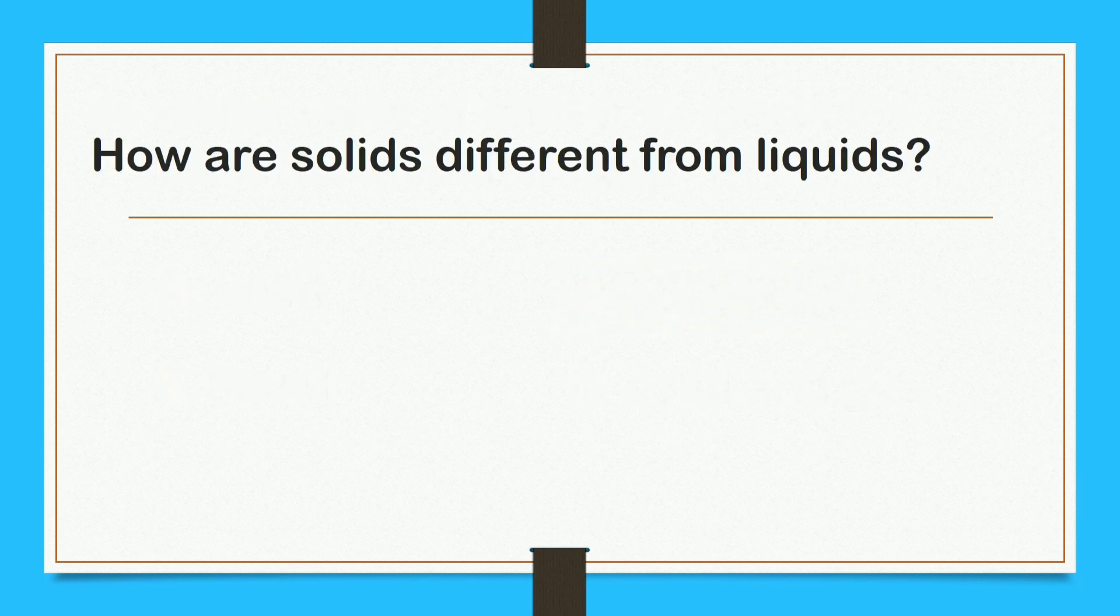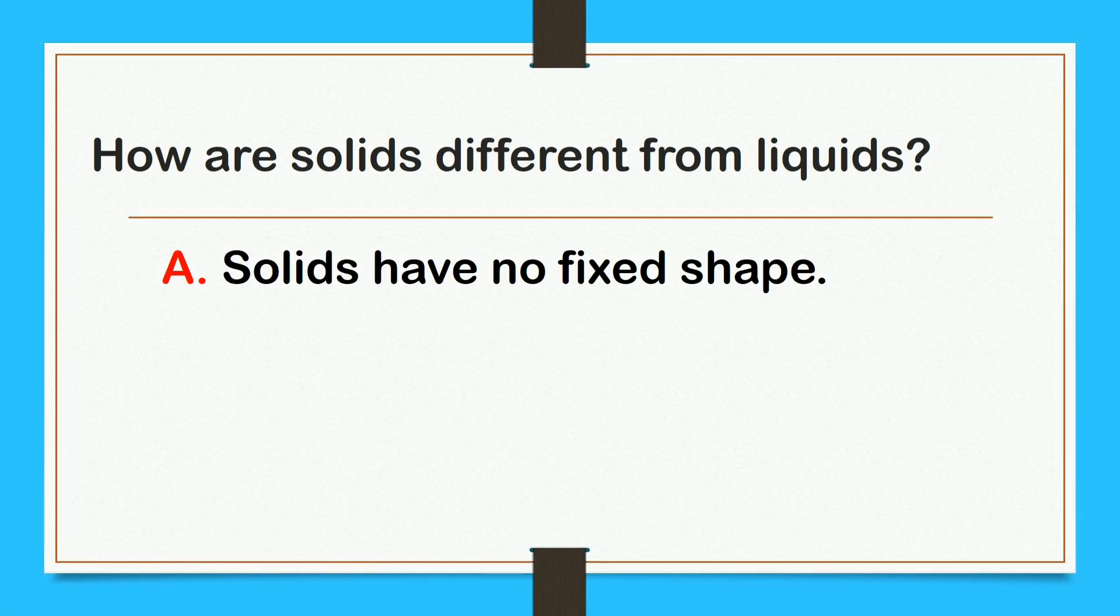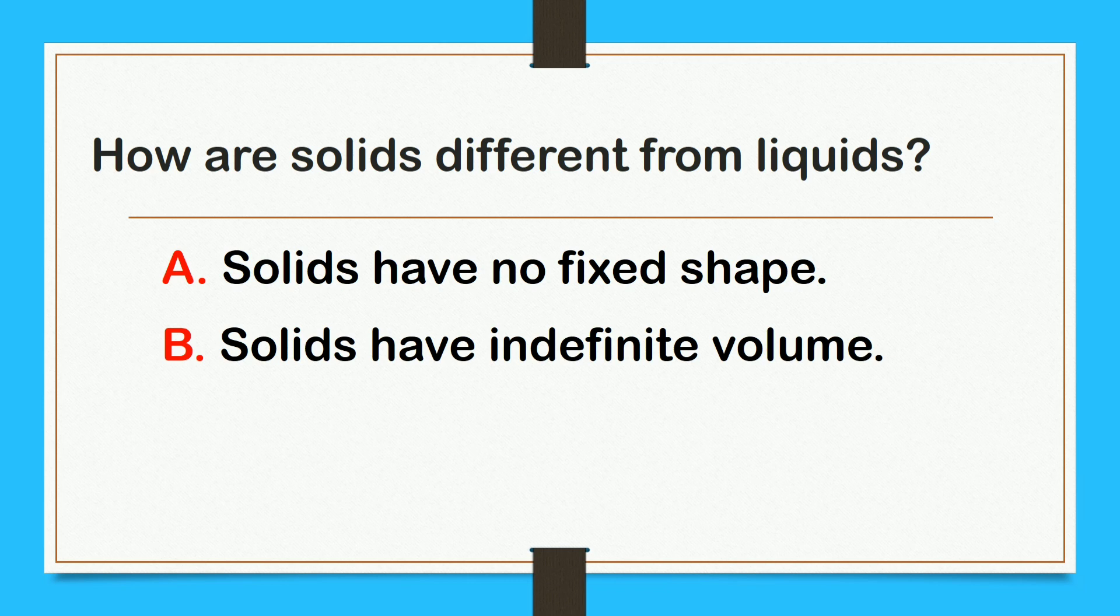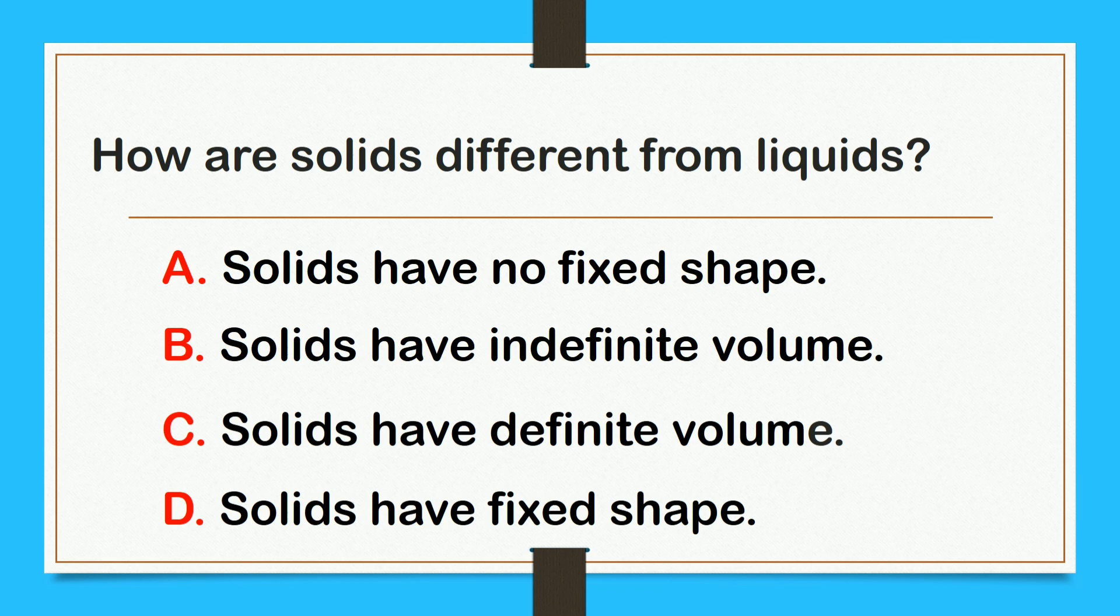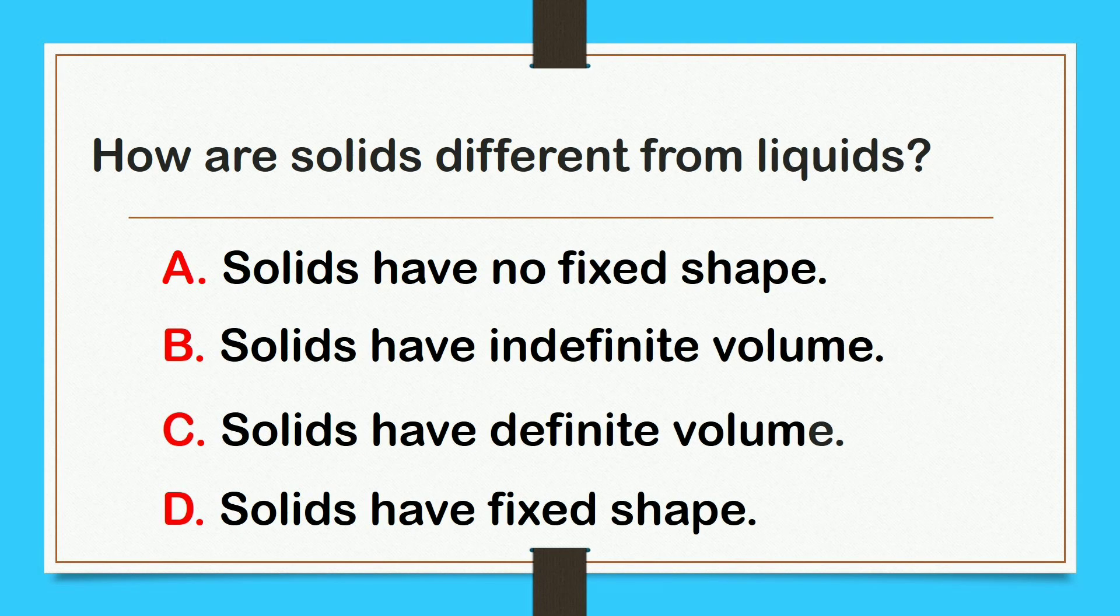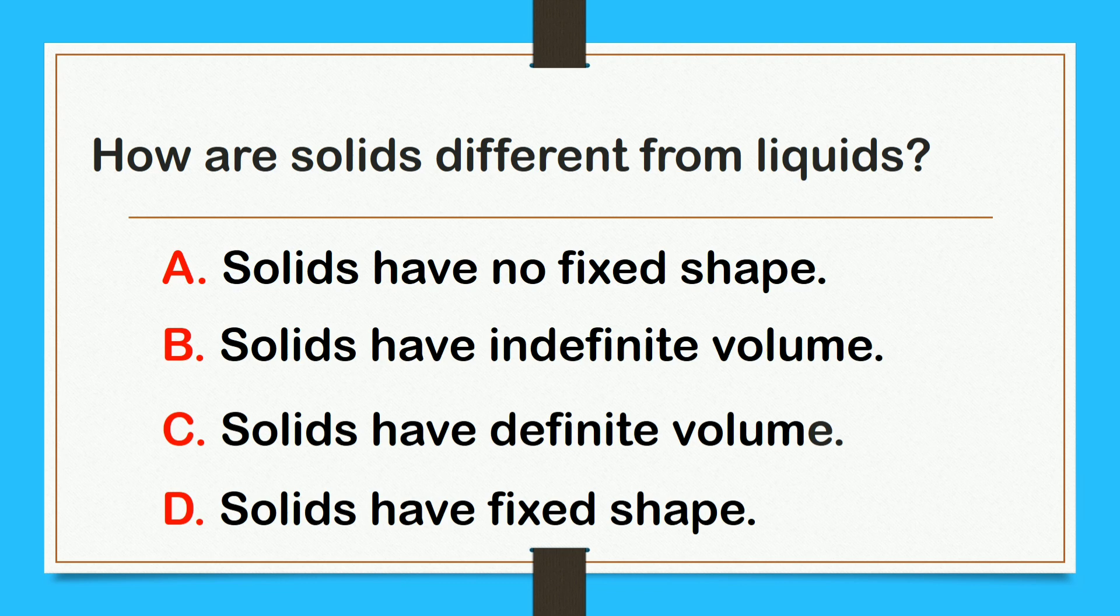How are solids different from liquids? Letter A, solids have no fixed shape. B, solids have a definite volume. C, solids have definite volume. Or D, solids have fixed shape. The correct answer is letter D, solids have fixed shape.